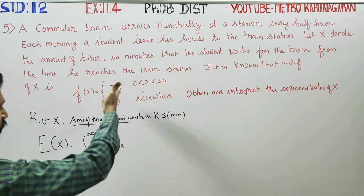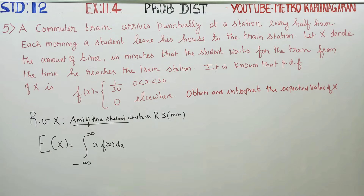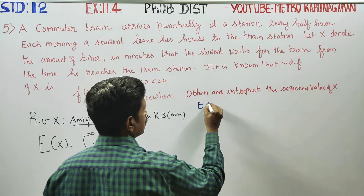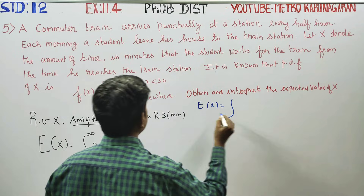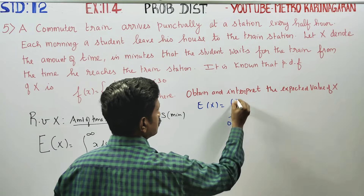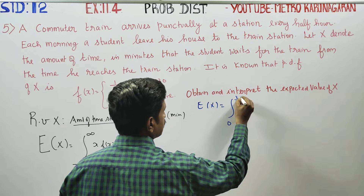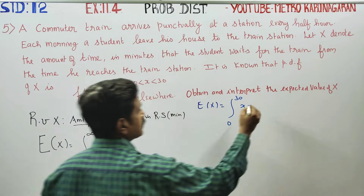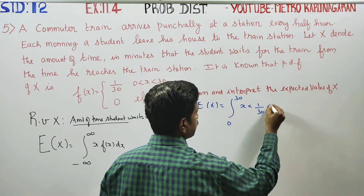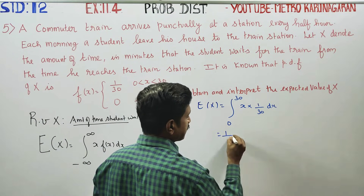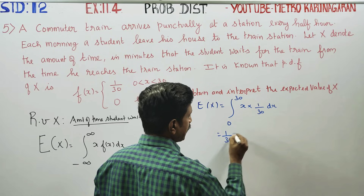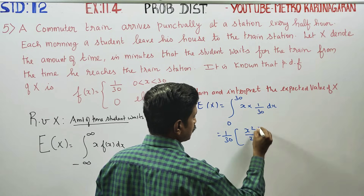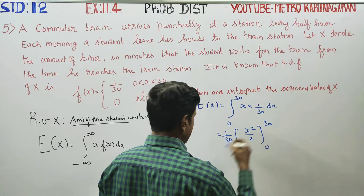The probability density function is given. So, the expectation of X is equal to the integral from 0 to 30 of x times f(x), where f(x) equals 1/30, dx. This gives 1/30 times x squared over 2, evaluated from 0 to 30.